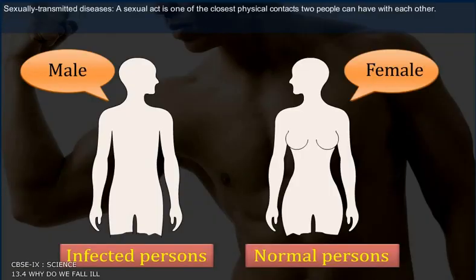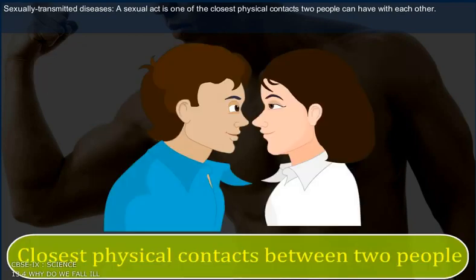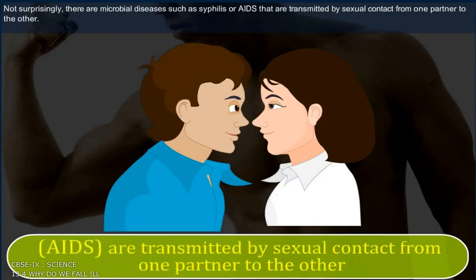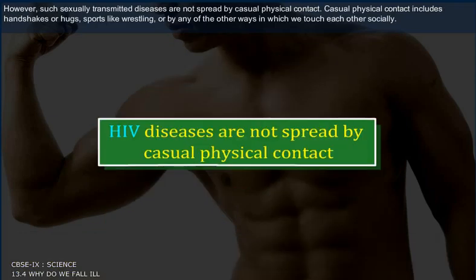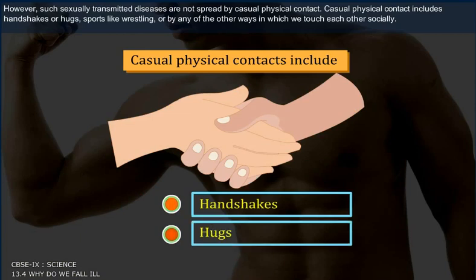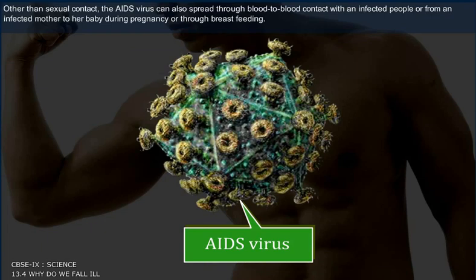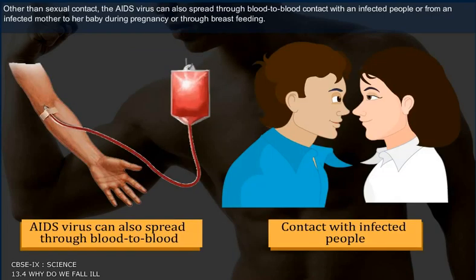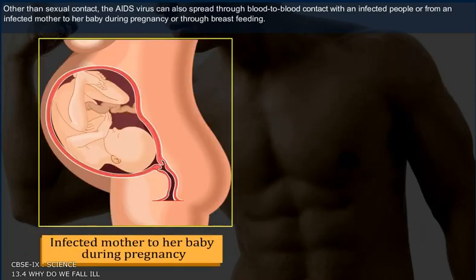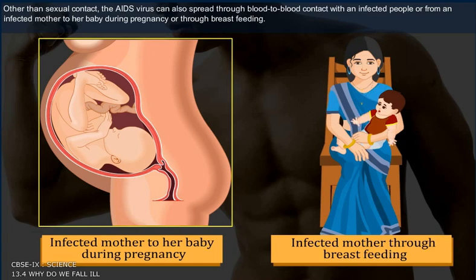Sexually transmitted diseases: The sexual act is one of the closest physical contacts two people can have with each other. There are microbial diseases such as syphilis and AIDS that are transmitted by sexual contact from one partner to the other. However, such sexually transmitted diseases are not spread by casual physical contact, which includes handshakes, hugs, sports like wrestling, or other ways in which we touch each other socially. Other than sexual contact, the AIDS virus can also spread through blood-to-blood contact with infected people, or from an infected mother to her baby during pregnancy or through breastfeeding.